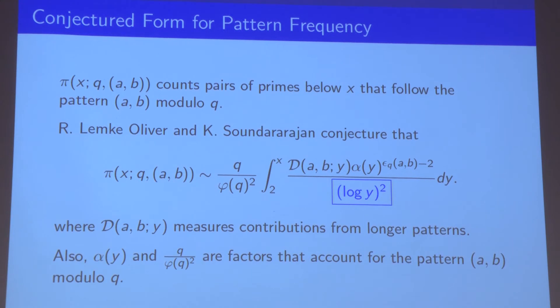Let me tell you exactly what I mean by that. Consider the prime pattern (1, 1). That is actually contained in the pattern (1, 1, 1). If I find a triple of primes that satisfies the pattern (1, 1, 1), then we're guaranteed that there are two occurrences of the pattern (1, 1). So D(a, b, y) measures how these longer patterns affect the frequencies of smaller patterns.